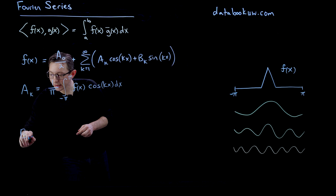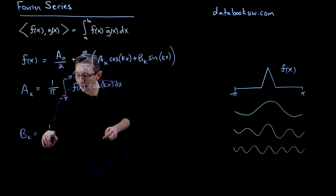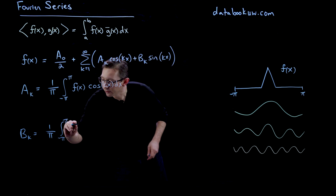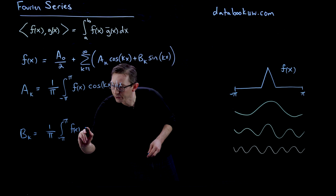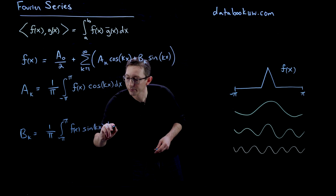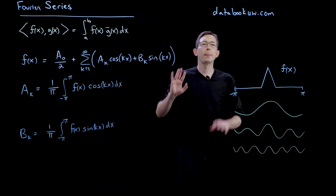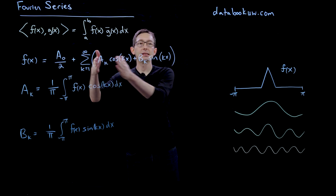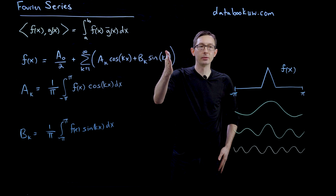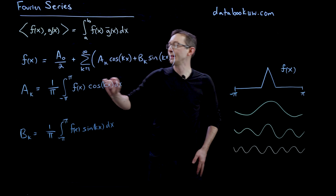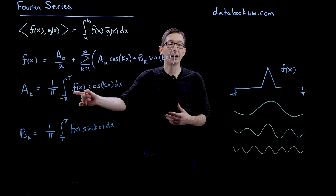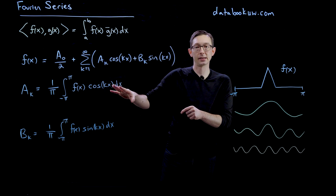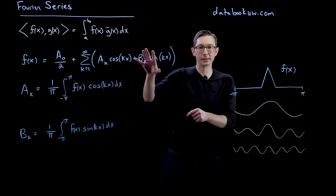Similarly, b sub k is equal to 1 over pi times the integral from negative pi to pi of f of x multiplied by sine of kx dx. So what we have here is an expansion of f — we can approximate f by a sum of cosines and sines of higher and higher frequency, with coefficients determined by the inner product, the Hilbert space inner product, of my function f with that particular cosine or sine wave.